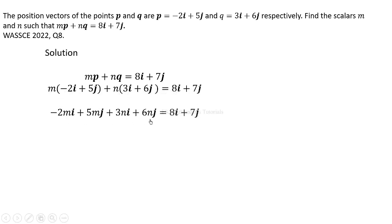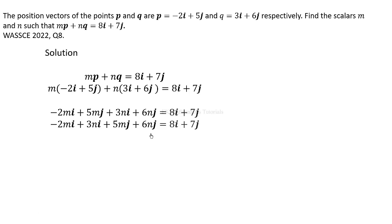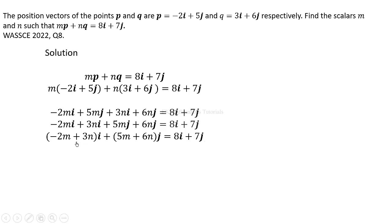After expanding, we group the i-component and the j-component on the left-hand side. This gives us (negative 2m plus 3n)i plus (5m plus 6n)j, which equals 8i plus 7j. Comparing the i-components gives us the first equation: negative 2m plus 3n equals 8.